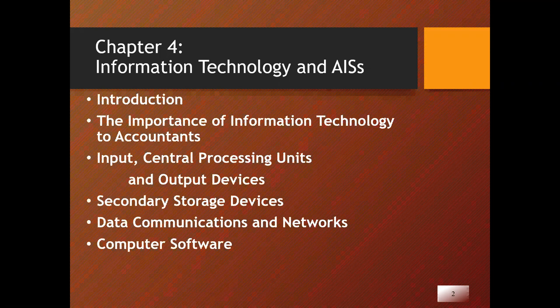3. Identify source documents and explain why they are important to Accounting Information Systems. 4. List some common Accounting Information System uses for point-of-sale, magnetic ink character recognition media, and optical character recognition. 5. Explain in general terms the value of secondary storage devices to Accounting Information Systems. 6. Summarize why data communications are important to Accounting Information Systems.